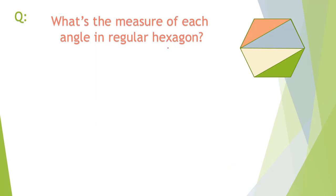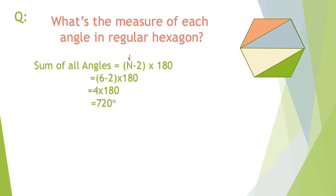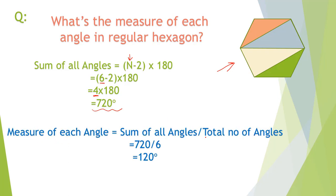From this, we can solve: what is the measure of each angle in a regular hexagon? N equals six. Six minus two equals four. There are four triangles. Four times 180 equals 720 degrees total. Since it is a regular hexagon, all angles are equal. Dividing the total 720 by six angles gives the measure of each angle.